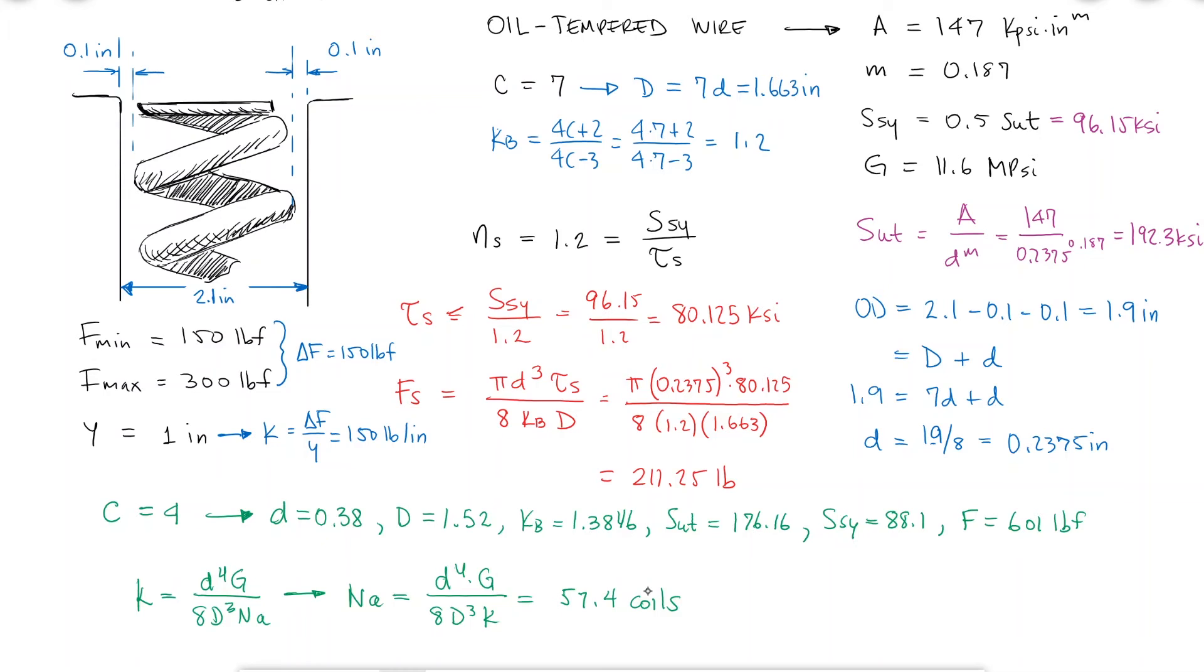But to answer the question here, the code would tell us that a spring index of 5.62 would in fact cause the maximum force to be just over 300, but the total number of coils would still be over 15, which isn't ideal.